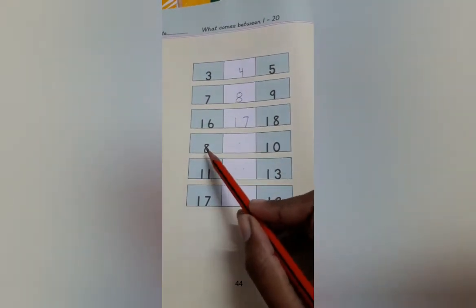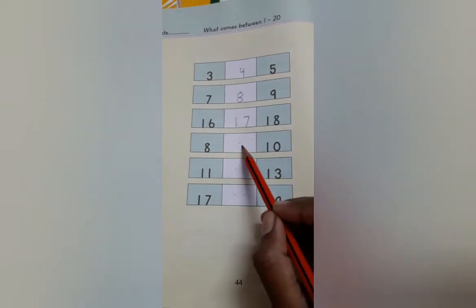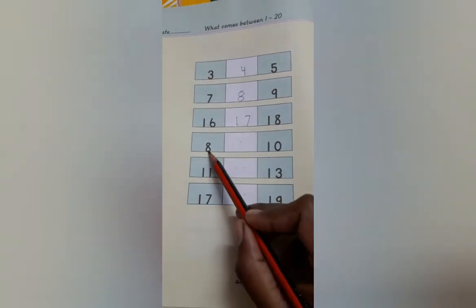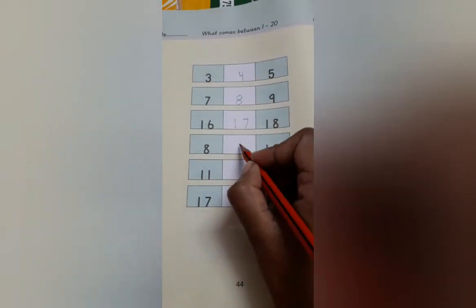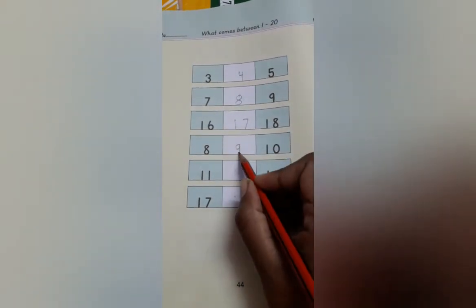Okay, now read this number: 8. What comes after 8? Yes, 9. Yes. Very good. 8, 9, 10. Right here. Number 9. 9 comes between.